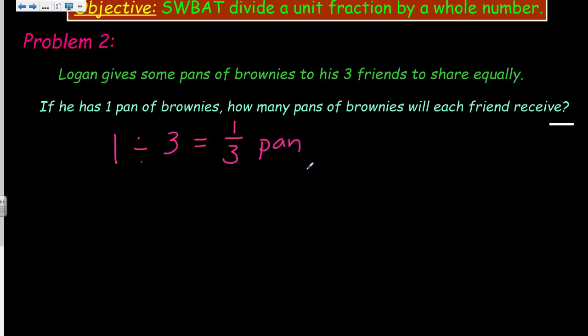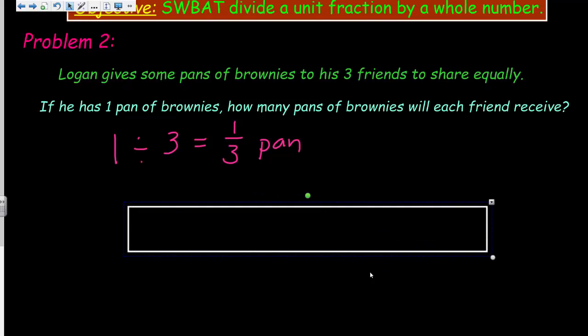So, that means that each of his friends are going to get one third of the pan. He did start off with one pan, but when he divided it equally with his three friends, each one ends up with one third pan. So, let's go ahead and model this. Model, model, model. That's what Mr. Wara says all the time. Model. Okay. I know. It's just part of math. Modeling.